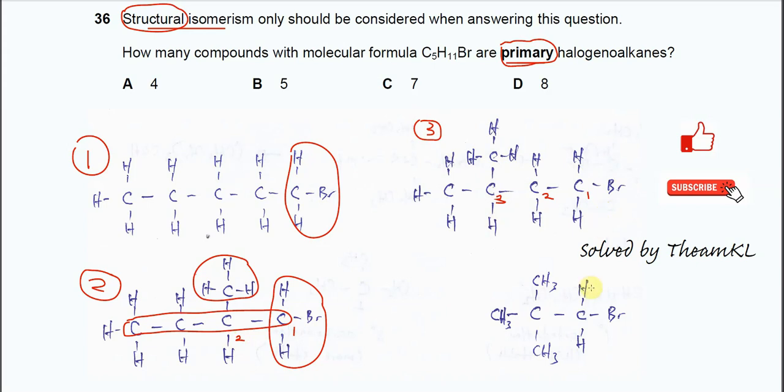After that we try to do this part. So we put this tertiary butyl group to this CH2Br. So the main chain now is three carbon and we put the two methyl groups on the second carbon. So this is the last isomer.